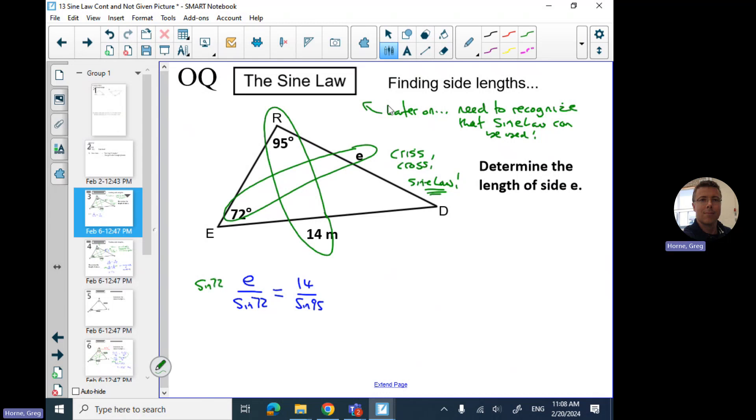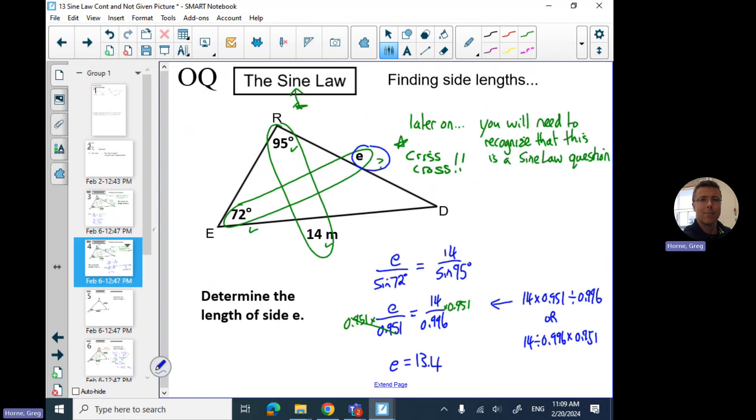You multiply sine 72 on both sides, or you could get them all as numbers and then multiply it. It's kind of easier because we're writing out a bunch of numbers. So we're going to solve for this on the calculator. Make sure we're in degrees. We're going to do sine of 72, get that number, multiplied by 14, divided by sine of 95. Should end up with 13.365 dot dot dot. So if you're rounding to one decimal place, 13.4 meters.